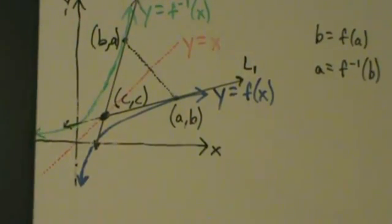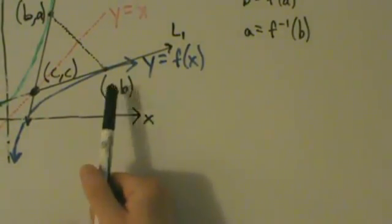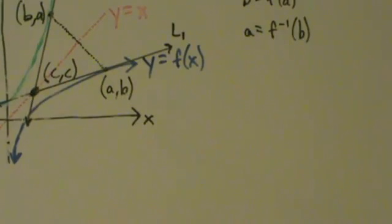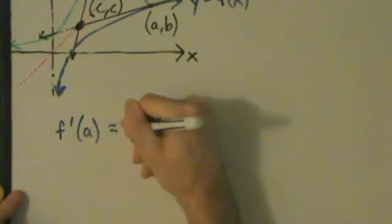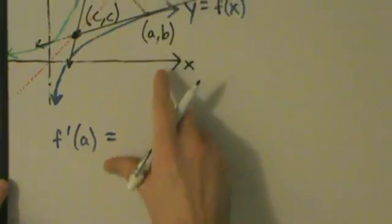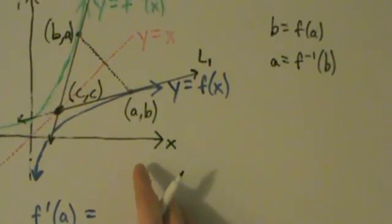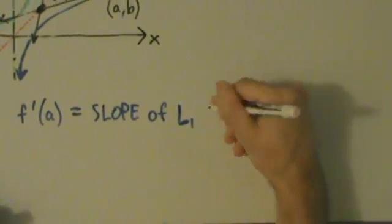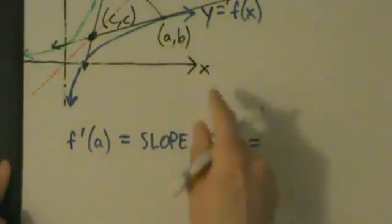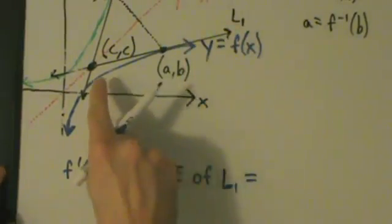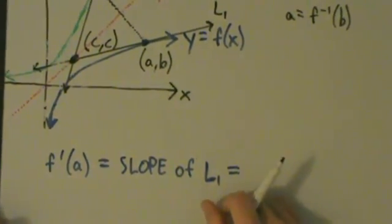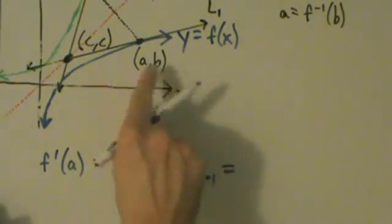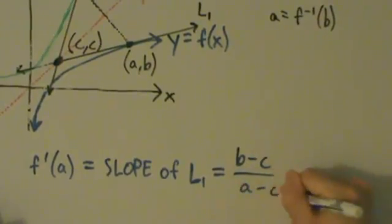Let's start talking about derivatives. Here's y equals f of x, and here's the point (a, b). What is f prime of a? The derivative at a point is the slope of the tangent line at that point, so f prime of a is the slope of L1. We have two points on L1: (a, b) and (c, c). So the slope of L1 is (b minus c) over (a minus c) — that's change in y over change in x.